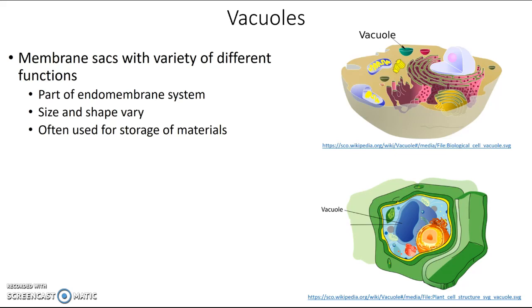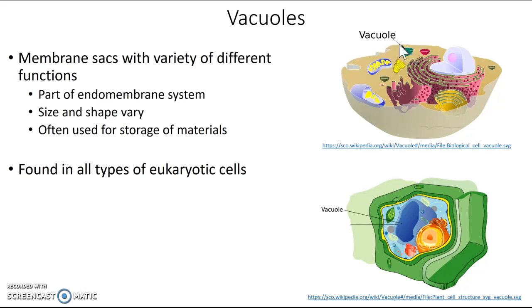Vacuoles are found in every type of eukaryotic cell — we find them in plant cells, animal cells, and fungal cells. Up here we've got an animal cell with a vacuole indicated, and down here we've got a plant cell where the vacuole is this really large structure. So we do find them in many different types of cells.